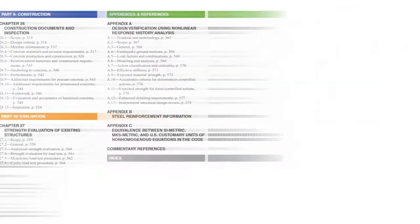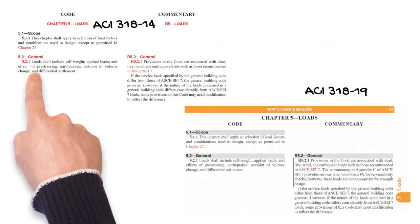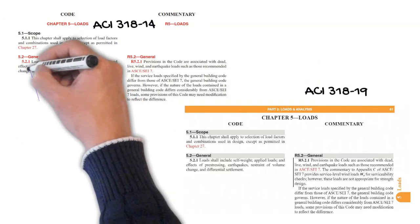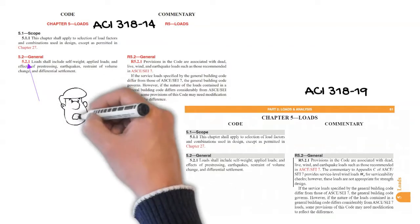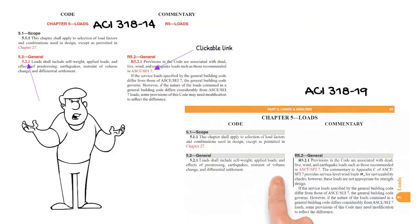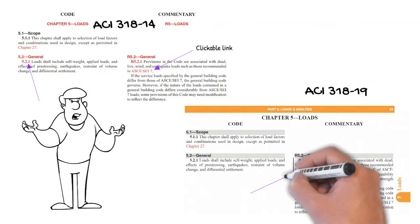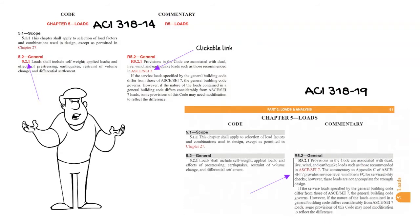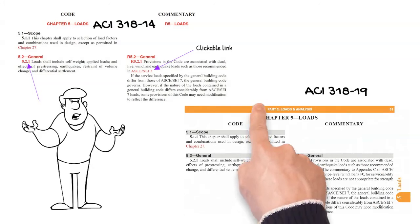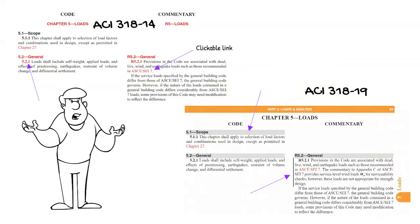In ACI 318-14, if you see a section number in red, that means the section is updated from the previous version, that is ACI 318-11. In ACI 318-19 though, you will find a vertical line on the left of the section as an indicator of the update from the previous version that is ACI 318-14. The headings are highlighted in gray in ACI 318-19 version.